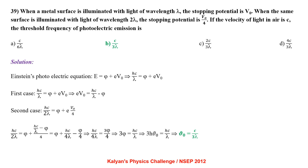When a metal surface is illuminated with light of wavelength λ the stopping potential is V₀. When illuminated with wavelength 2λ the stopping potential is V₀/4. Einstein's photoelectric equation: hc/λ = φ + eV₀ and hc/2λ = φ + eV₀/4. Substituting: hc/2λ = φ + (hc/λ − φ)/4. Solving gives the threshold frequency ν₀ = c/(3λ).